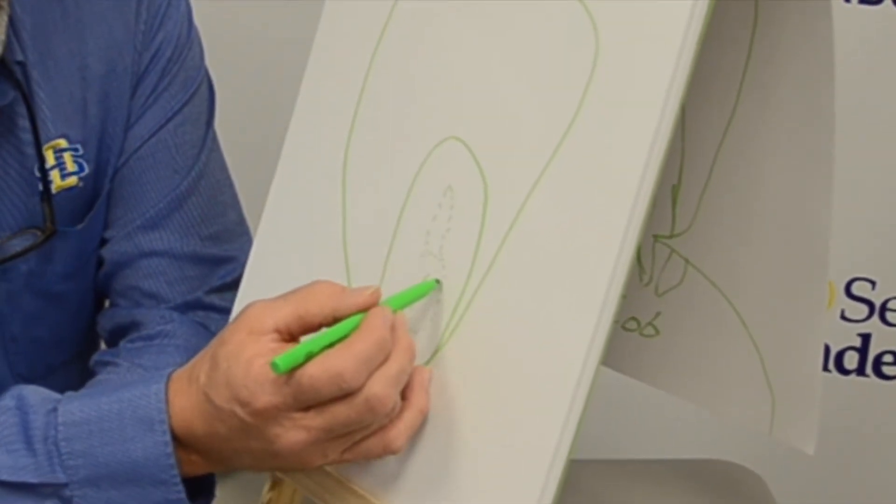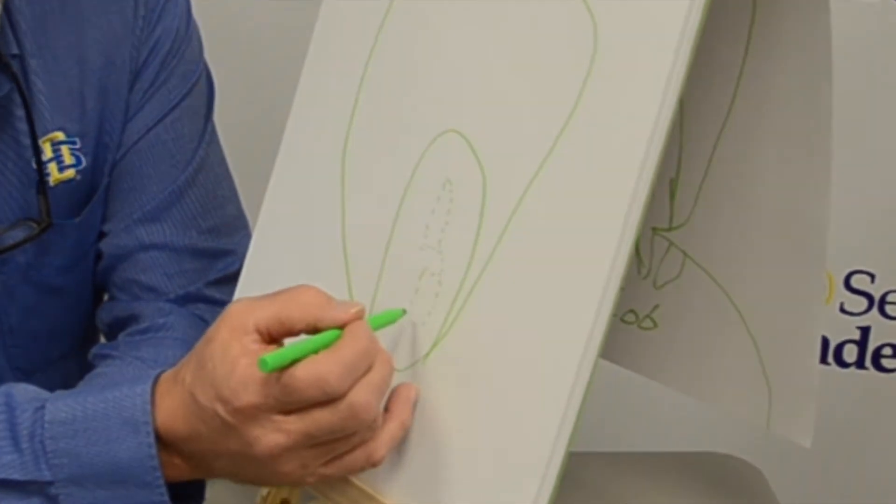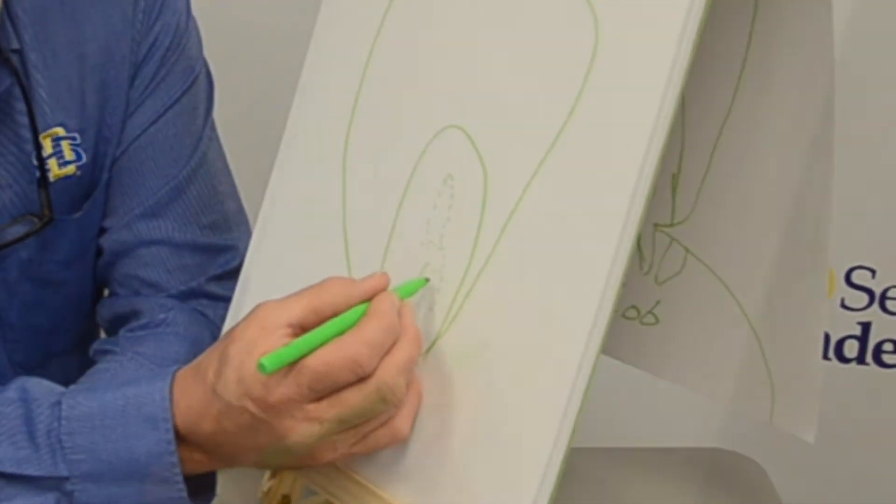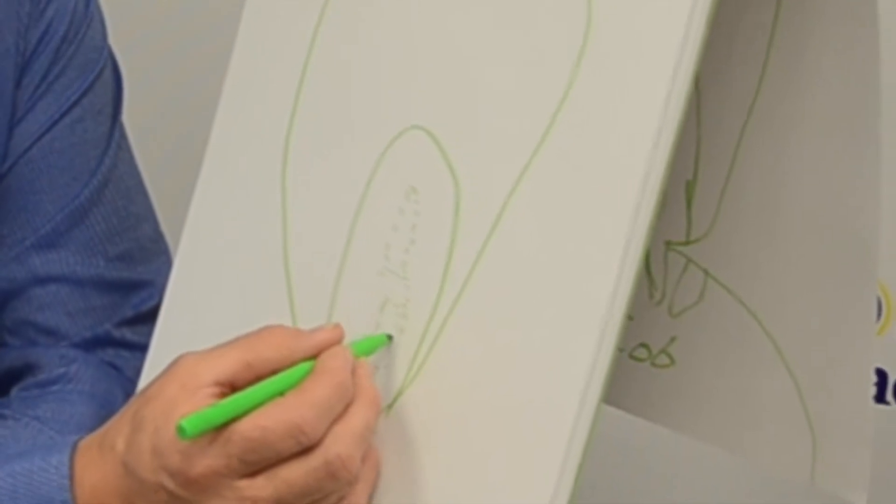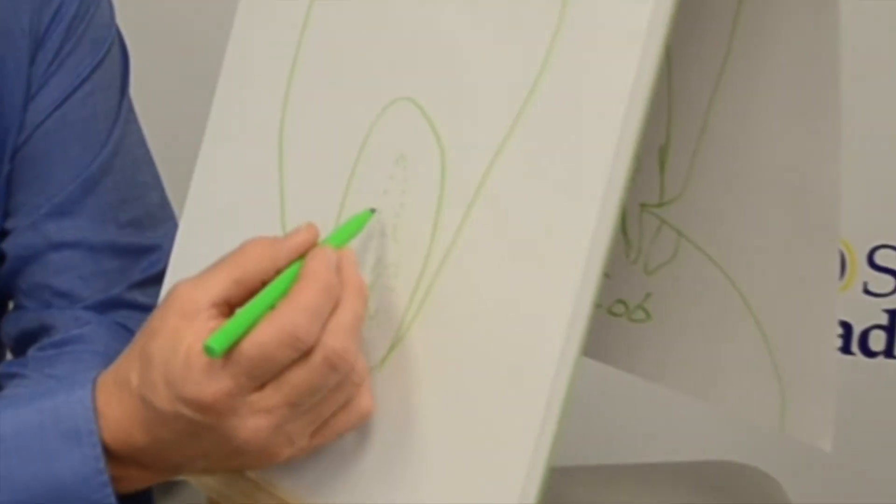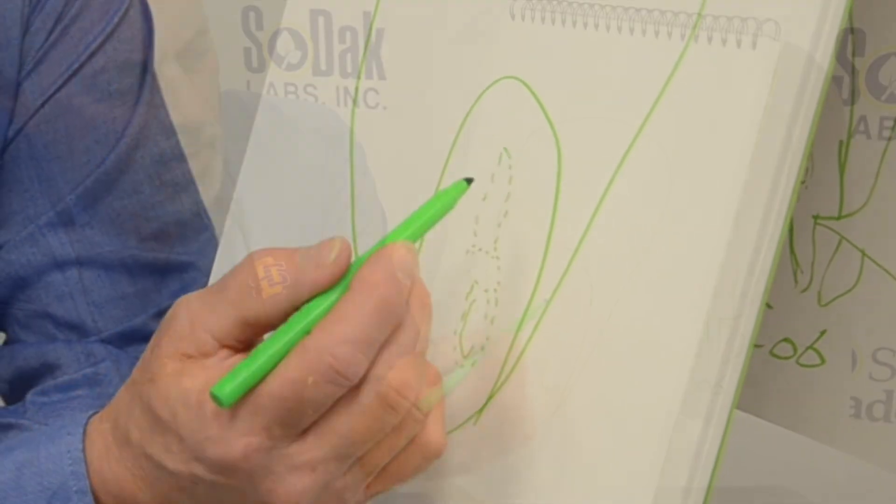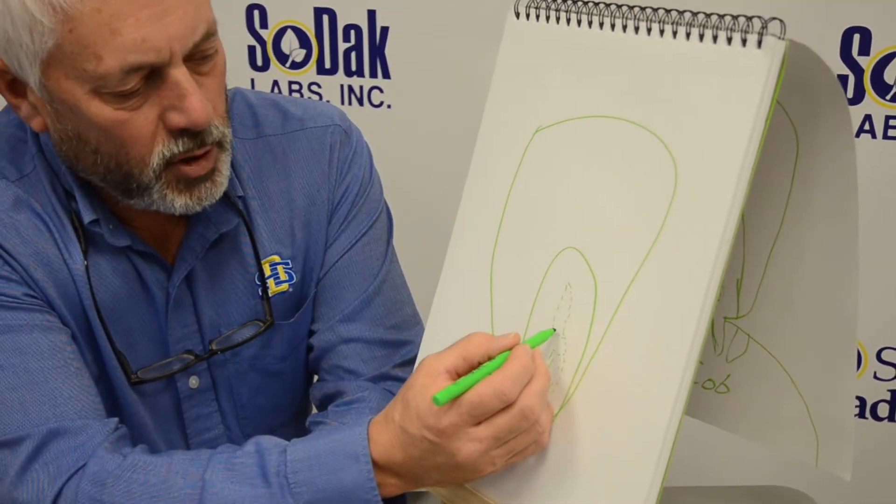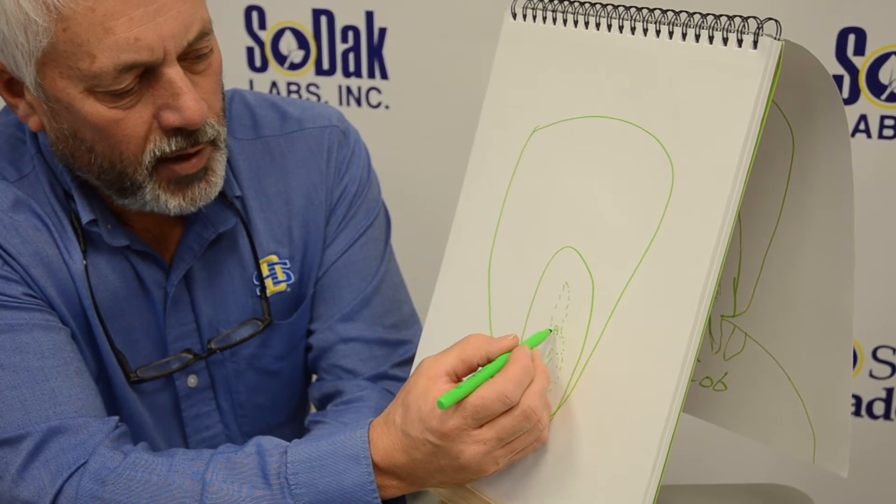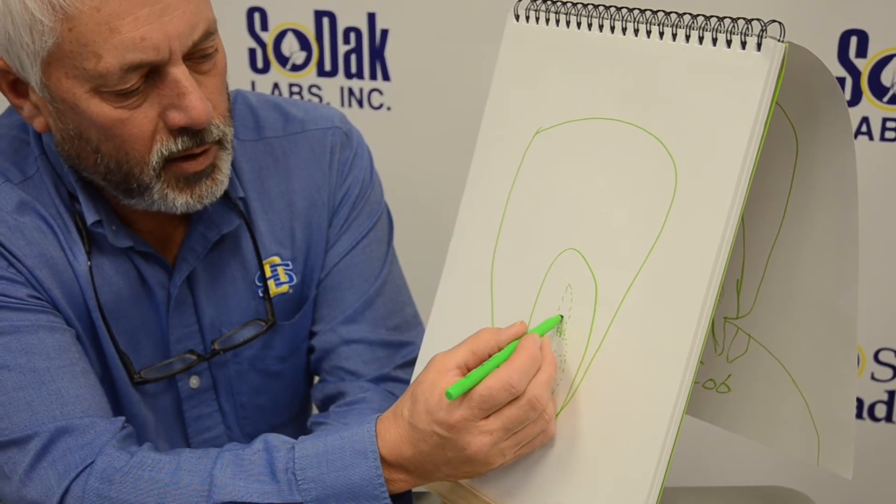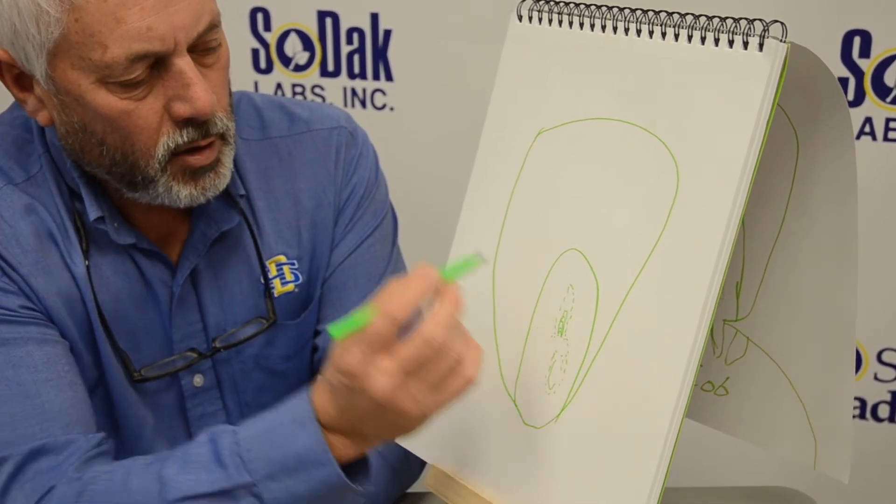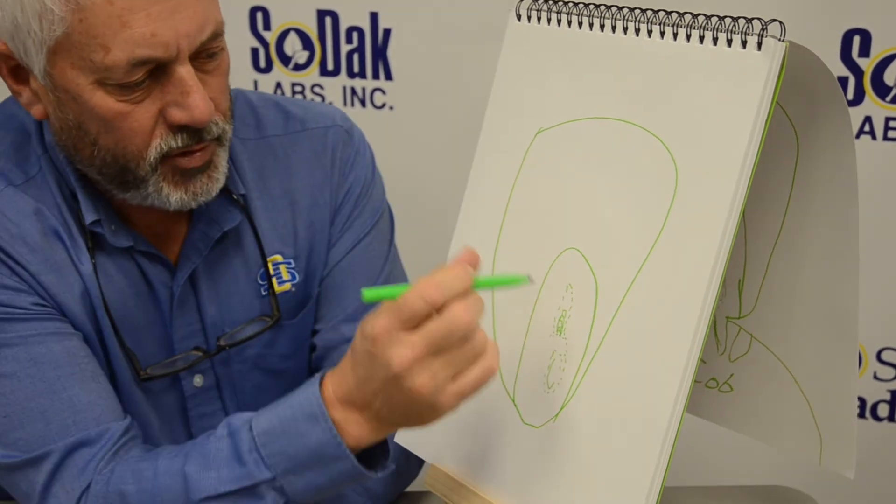And then we have our coleorrhiza, our root cap, and our actual root tissue within here. The coleoptile here is what helps get our leaves out of the ground. So our leaves, our growing point is right here where we have all our leaves forming that are going to be part of our corn plants.